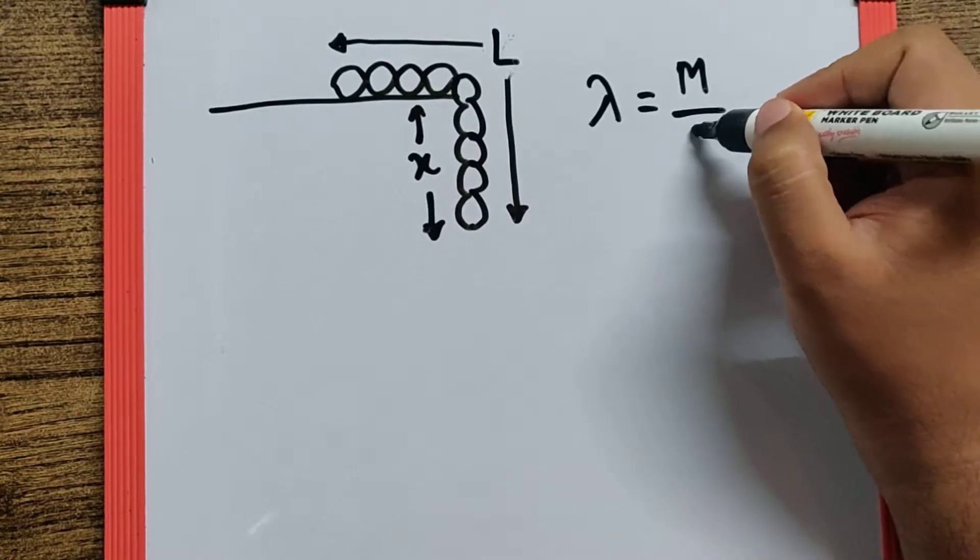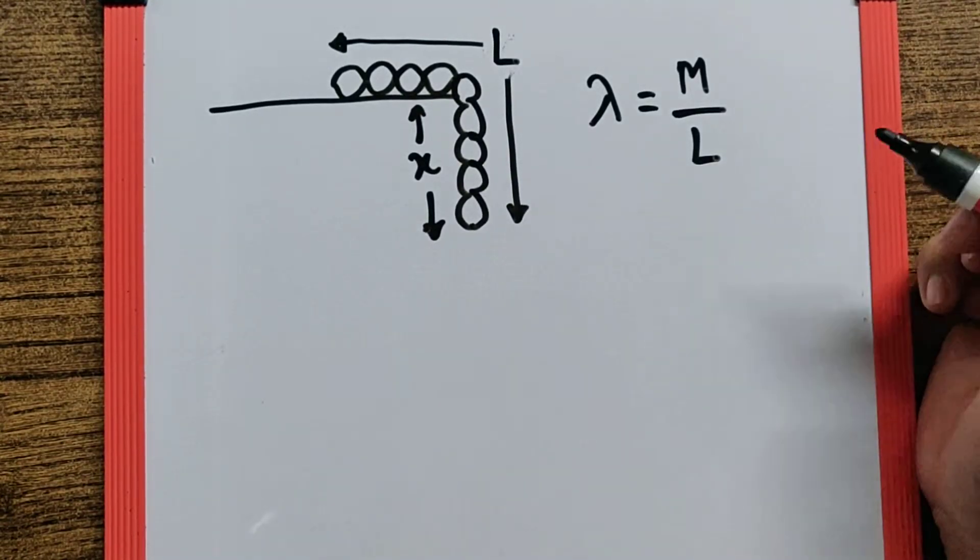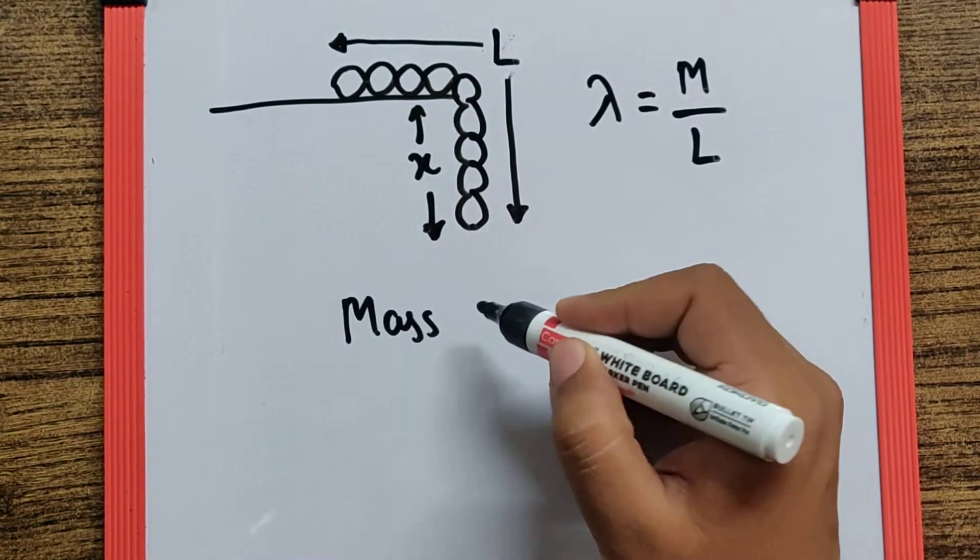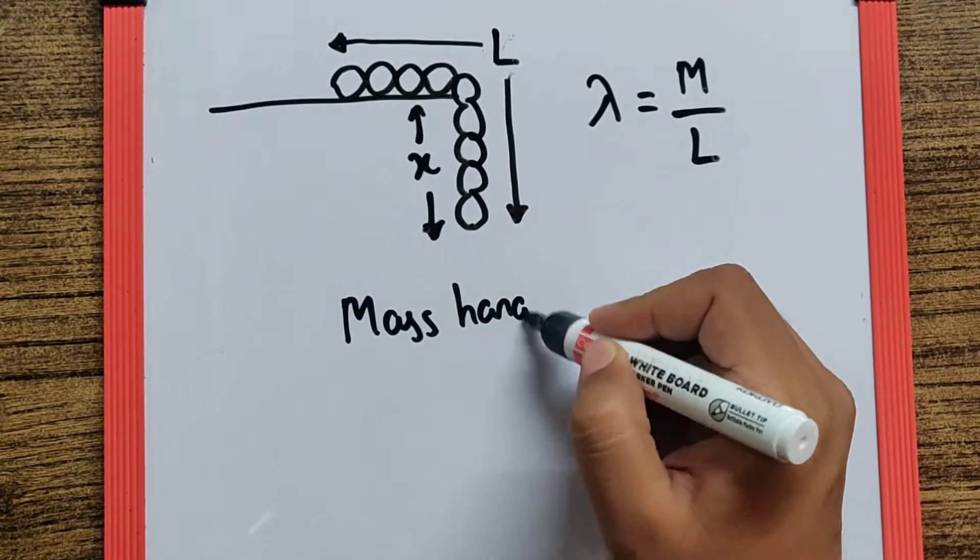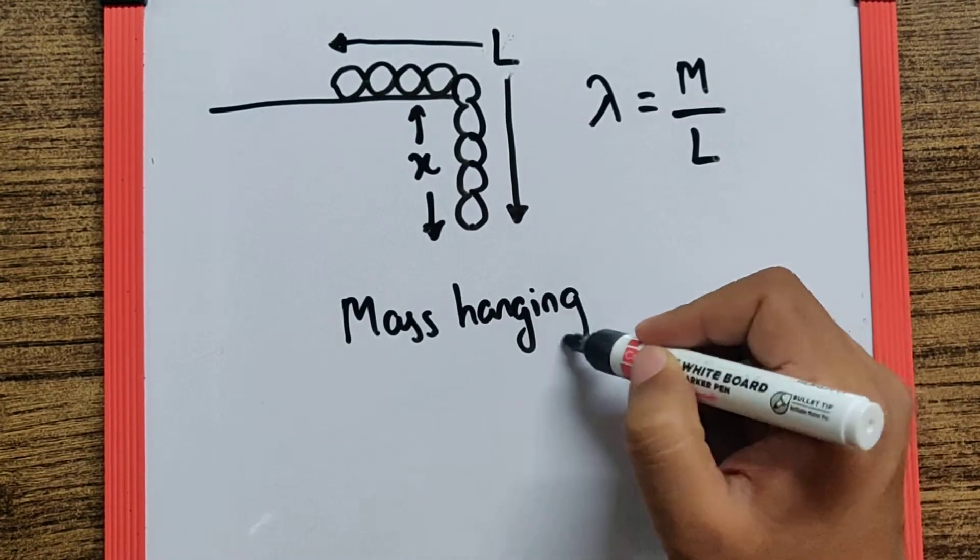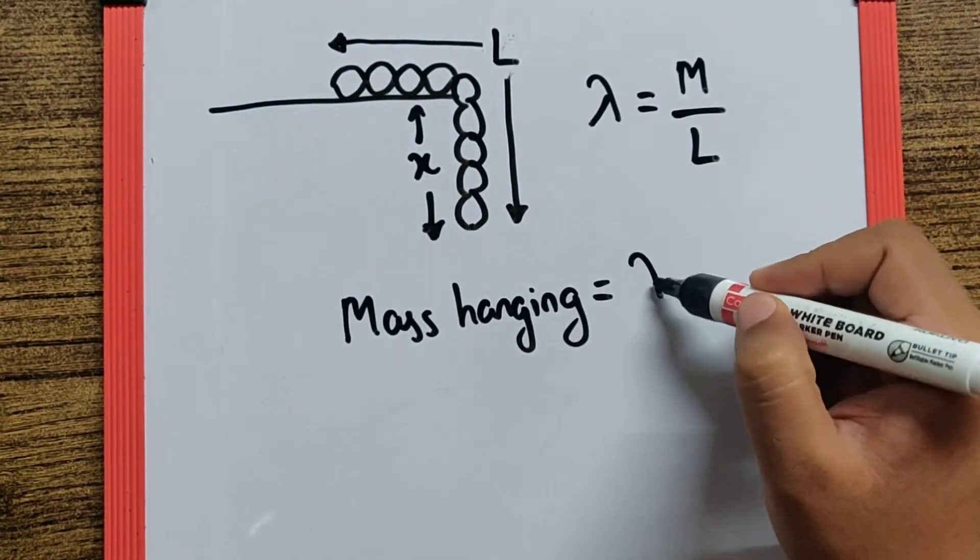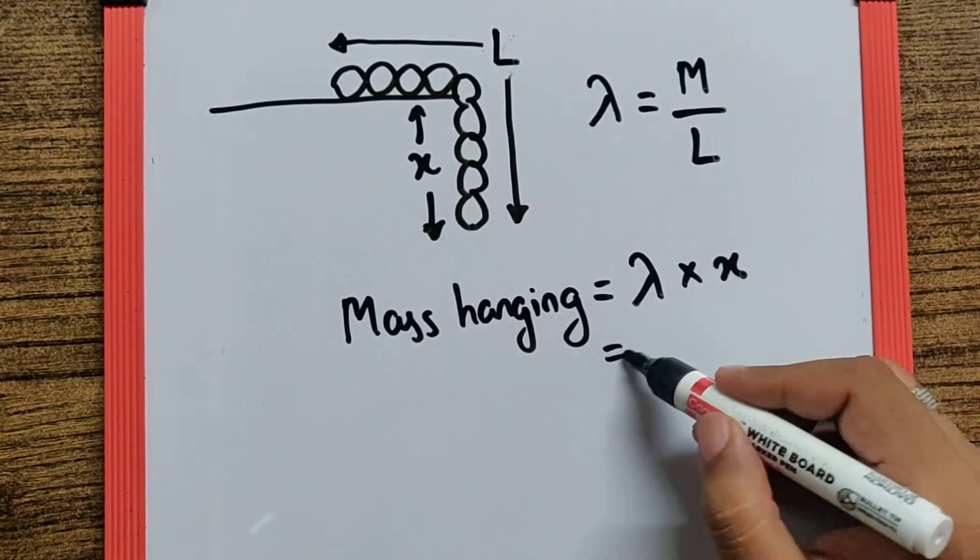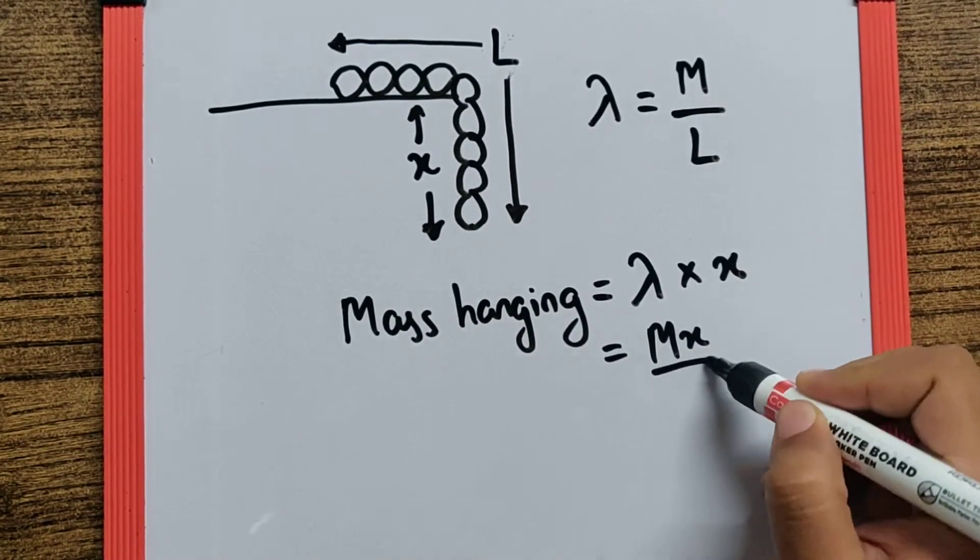That means if I want to find the mass hanging, I should say it is the linear mass density into the length of the wire hanging. That makes it as MX by L.